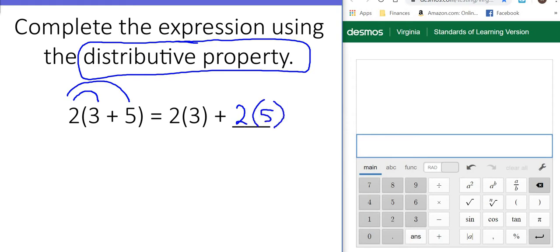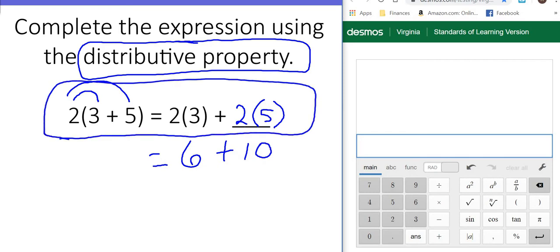So that's how you could complete the expression using the distributive property. If you wanted to go one step forward, 2 times 3 is 6, and 2 times 5 is 10. And you can even keep going from there, but this is all we would want from you at this point.